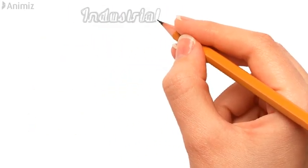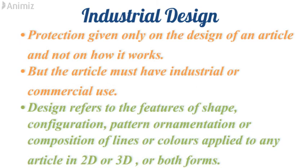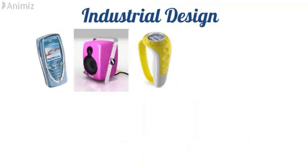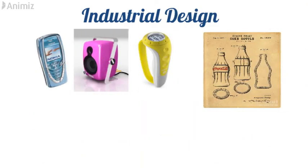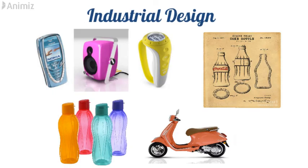The last type is industrial design. It is the protection given only on the design of an article, and not on how it works, but the article must have an industrial or commercial use. A design refers to the features of shape, configuration, pattern, ornamentation, or composition of lines or colors applied to any article in 2D or 3D or both forms. Some examples of industrial design include the design of a Coca-Cola bottle, the design of a Tupperware bottle, or the design of a Vespa scooter.